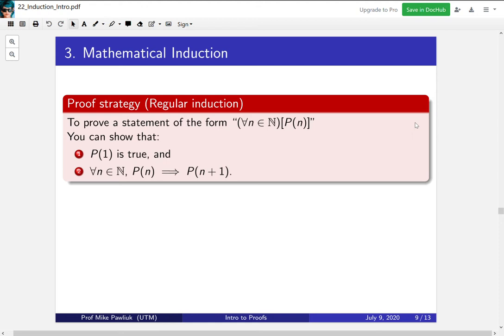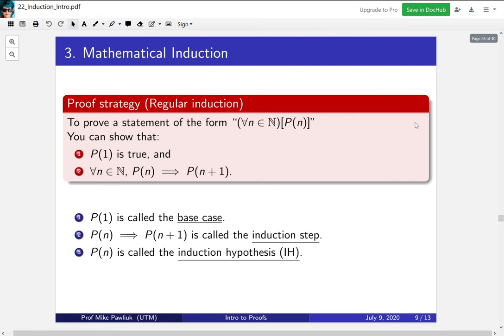So all of these things have various names. Let's go through those. This first part is called the base case, showing that P(1) is true. Oftentimes this is fairly easy and this is not the hard part of the proof.